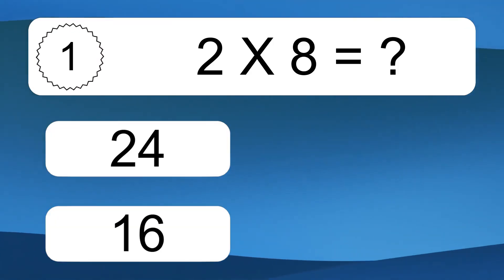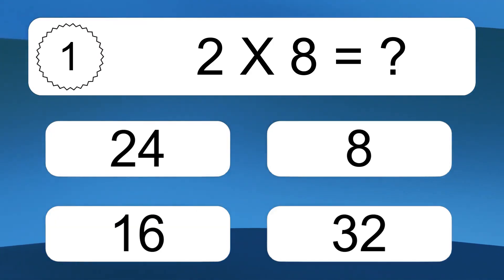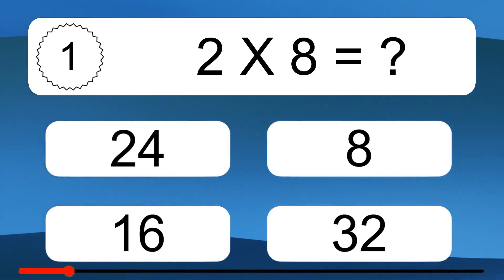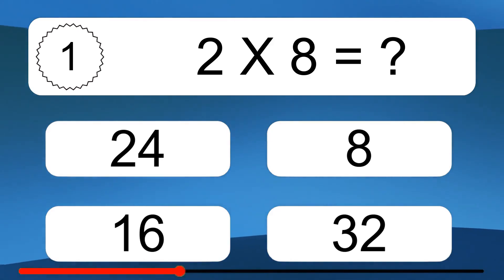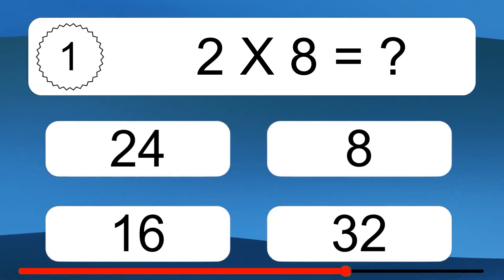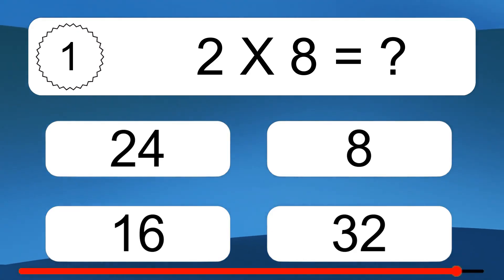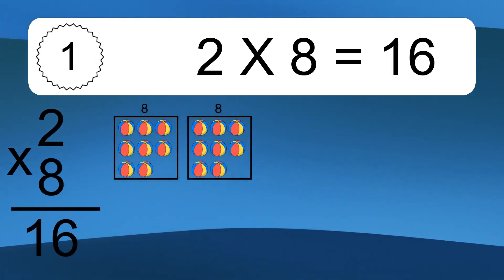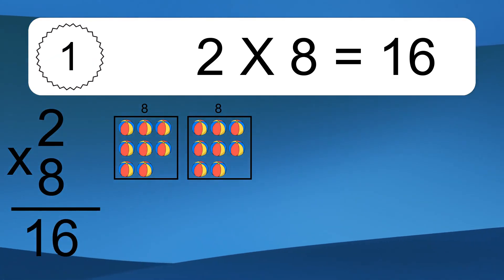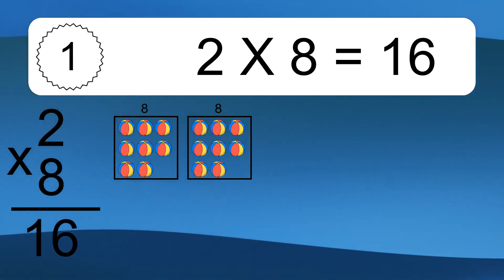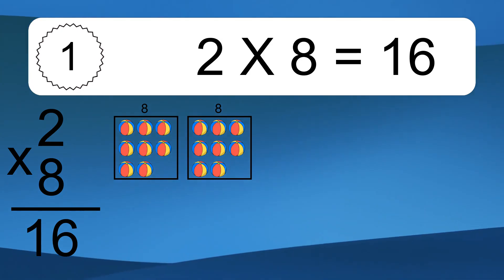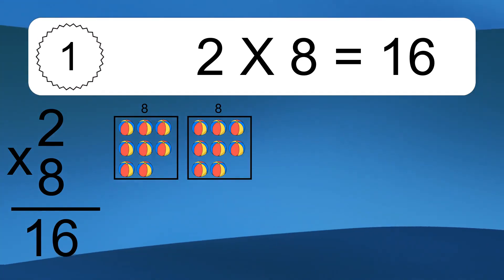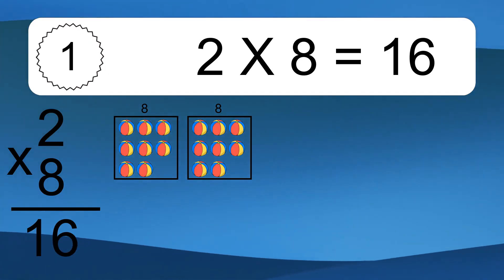2 times 8 equals what? 2 times 8 equals 16. We have 2 boxes, and each box has 8 colorful balls inside. If you count all the balls in all the boxes together, you will have 2 times 8 balls. This equals 16 balls.